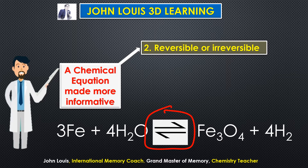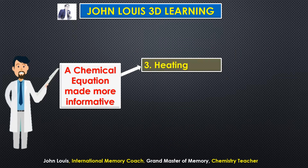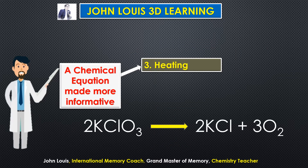That means the reaction takes place both in the forward direction and the reverse direction, so it is a reversible reaction. If the reaction is irreversible, the arrow points only from the reactant side to the product side. Here, with half-arrows in both directions, this is confirmed as a reversible reaction.